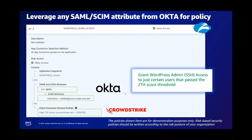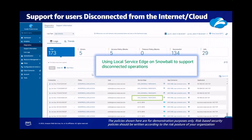Multiple attributes are consumed by the private service edge to enforce policy — including SCIM attributes, SAML attributes from Okta, and the high ZTA score from CrowdStrike. The threshold chosen for the high score was 75, and on the tactical user's device it registered around 88, granting that user access to SSH and RDP. You can also see movement from the public service edge — USFL 8819 in Miami, Florida — over to the Snowball's private service edge, enabling disconnected operations and maintaining zero trust capabilities on the local device.